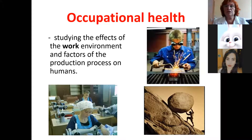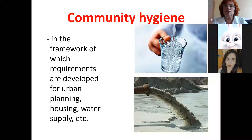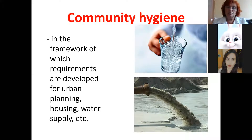Occupational health is a science that studies the effects of the work environment and factors of the production process on humans. Community hygiene is the section in the framework of which requirements are developed for urban planning, housing, water supply and others.